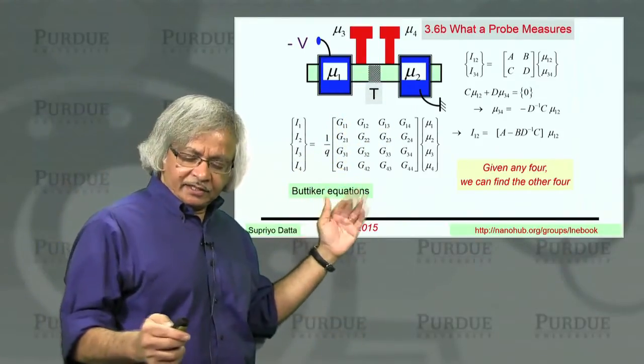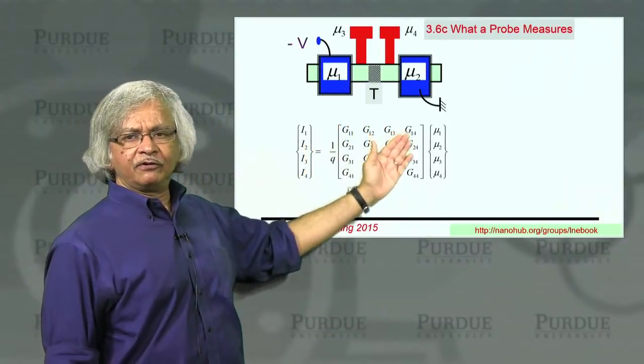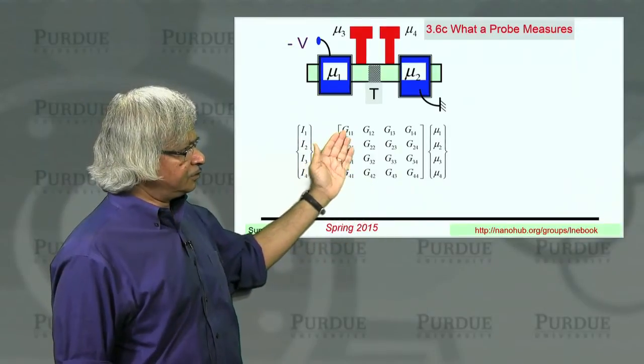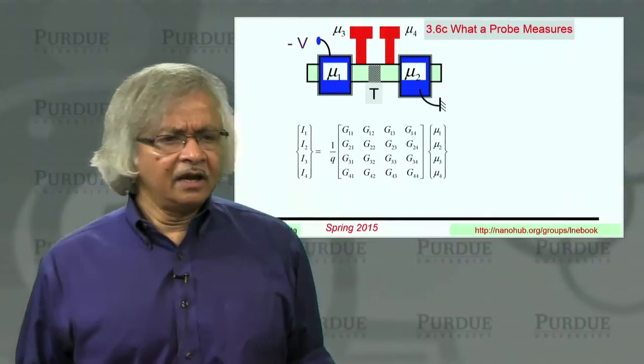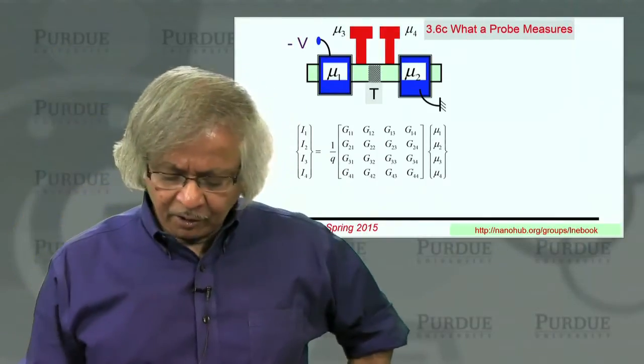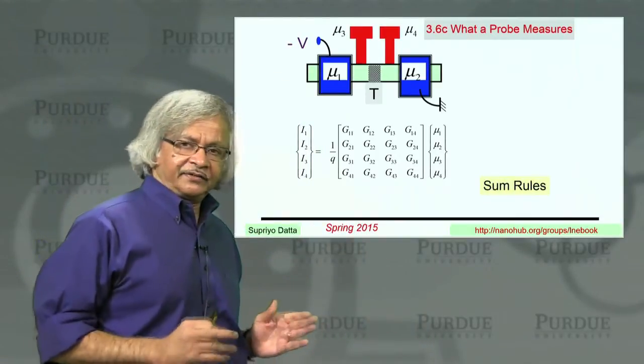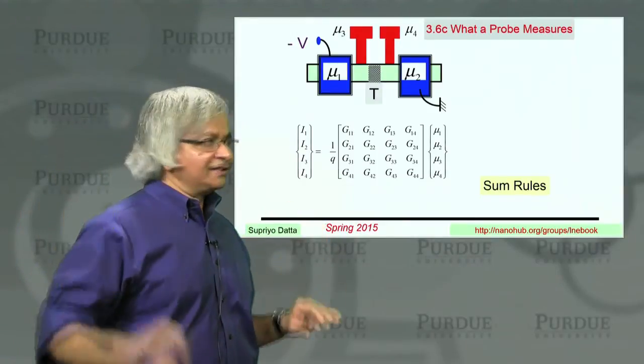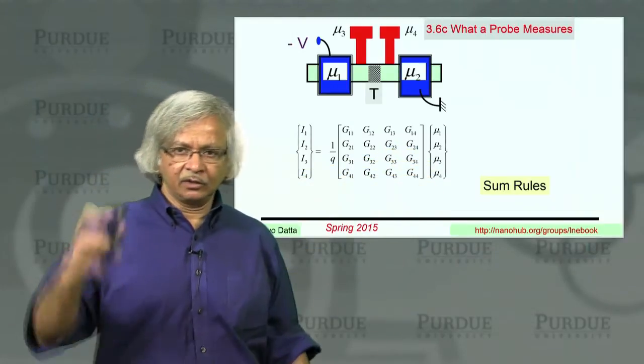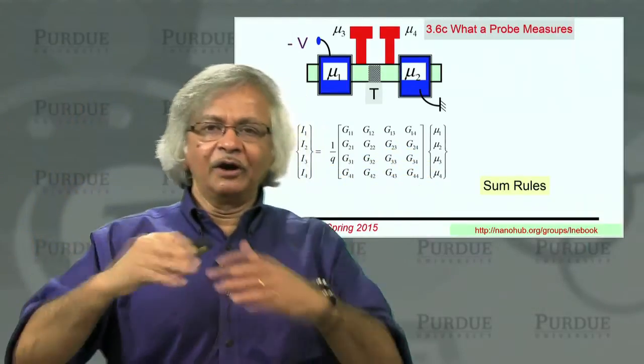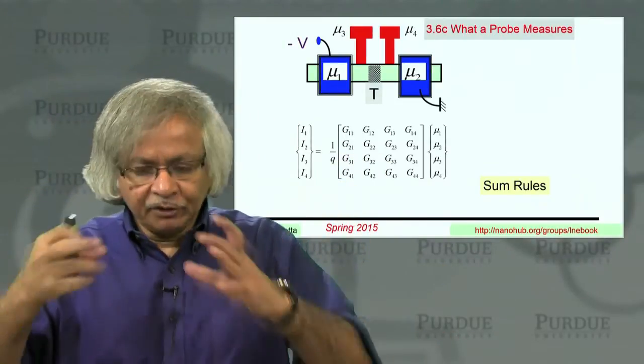Now, there's a few subtle points that I'd like to mention here. One is that you see you have this 4 by 4 conductance matrix. And you might say, do these 16 elements have any constraints or could they be anything? And there's a couple of very important constraints which you could call the sum rules. And the sum rules come like this. One important constraint is that if I put the same potential on all four terminals, like 1, 1, 1, 1, or 0.5, 0.5, 0.5, 0.5, there should be no current. That we know from experience.